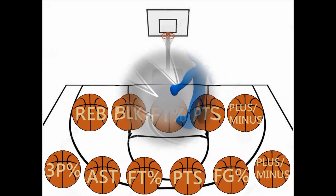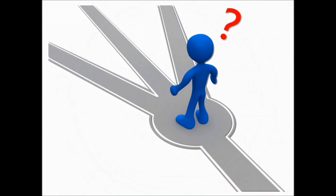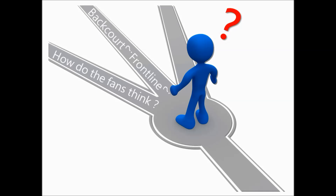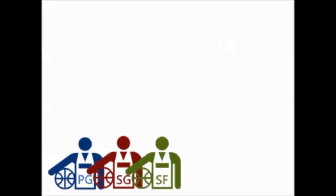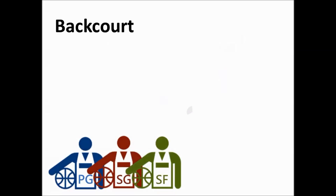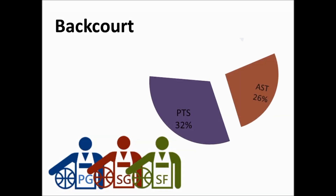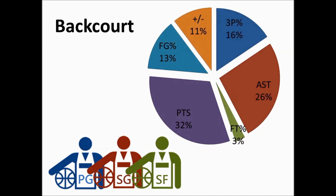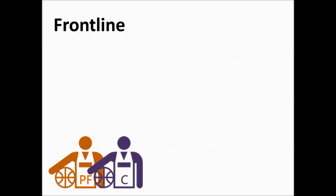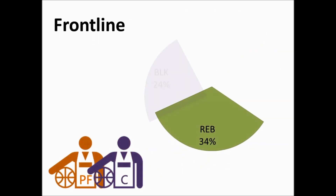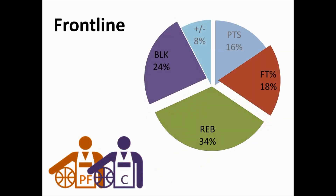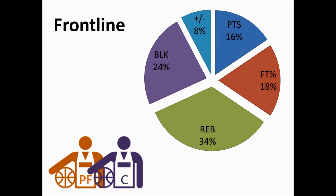Before we start our analysis and discussion, we first surveyed fans on which factors correlate to wages the most. For backcourt players, the top 3 are points, assists, and 3-pointer percentage. For frontline players, rebounds, blocks, and free throw percentage stand out.